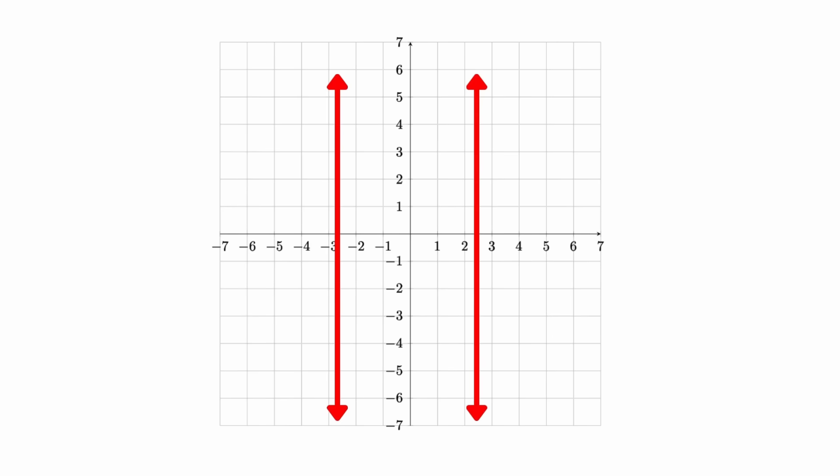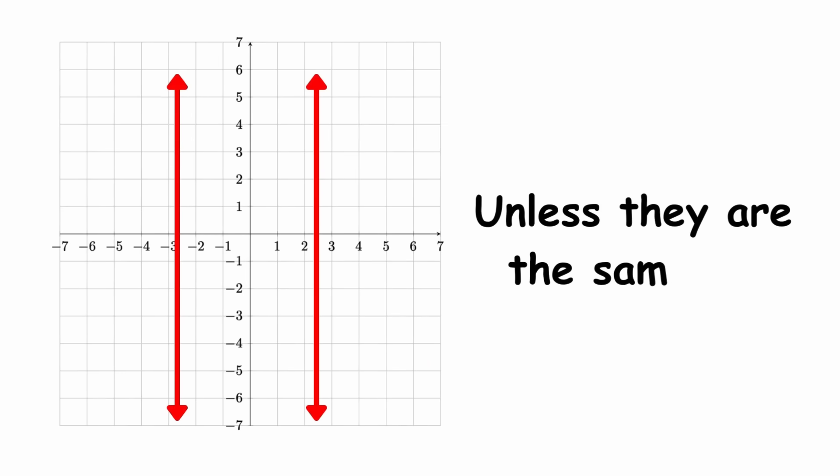Two lines are parallel if they have the same slope. That is, m1 is equal to m2. This means that both lines have the same slope and never intersect, unless they are the same line.